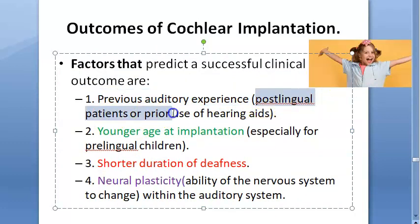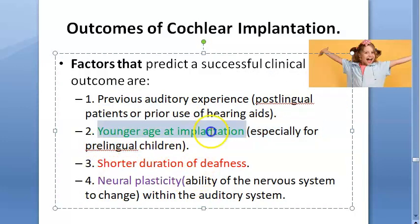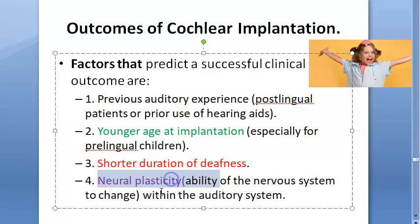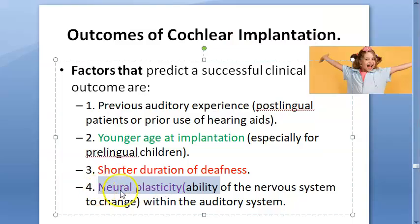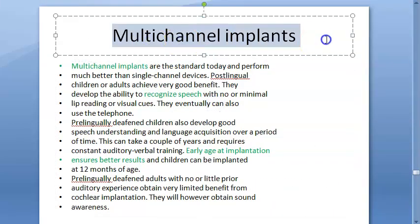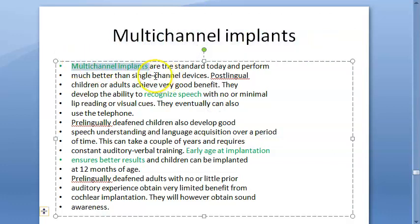Factors that predict successful outcome: previous auditory experience - that means it is a postlingual patient; younger age at implantation for prelingual children; shorter duration of deafness; neural plasticity - the ability to develop their auditory pathway. Multi-channel implants are now being used; they are much better than single channel devices. Early implantation is very important - they will develop ability to recognize speech.